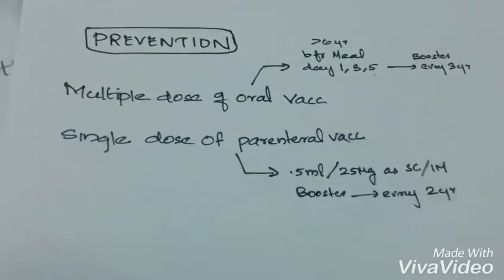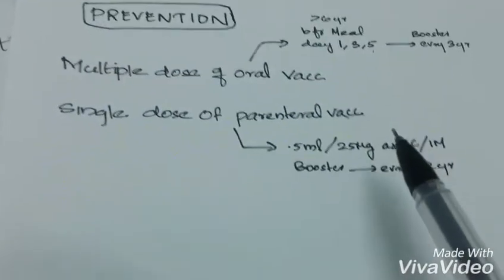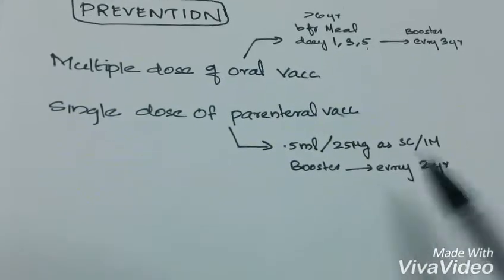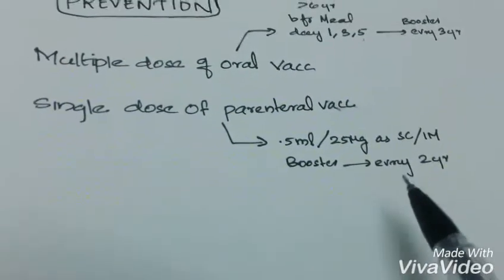Single dose of parenteral vaccination can be given as 0.5 ml or 25 micrograms subcutaneously or intramuscularly, taking booster dose every 2 years.